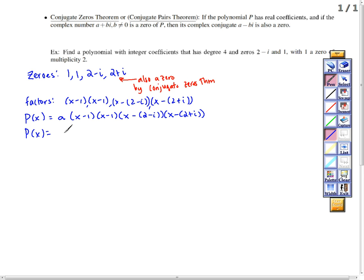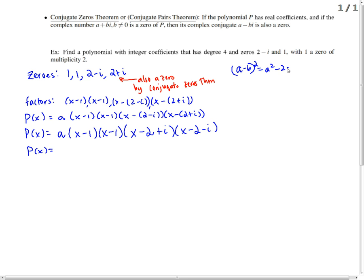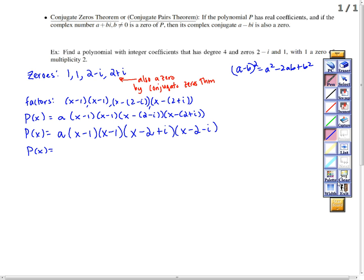So now I'm going to clean it up a little bit. P of x is a times x minus 1 times x minus 1, or x minus 1 squared. And then I have x minus, I'm going to distribute this negative sign, x minus 2 plus i, and then x minus 2 minus i. I'm going to do a couple of things here.